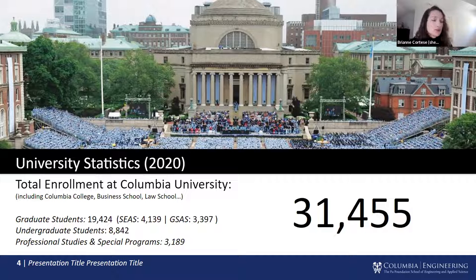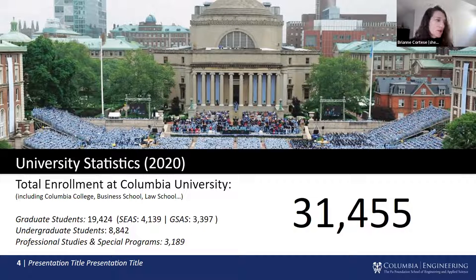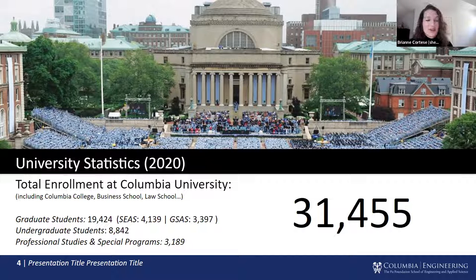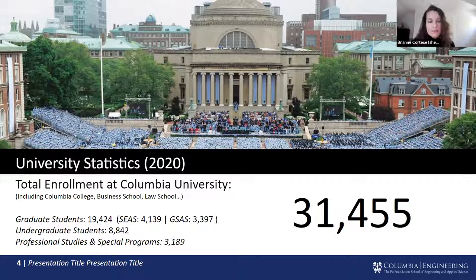As of 2020, the most recent statistics available, there were over 31,000 students enrolled at Columbia, including undergraduate and professional schools. The graduate student population outnumbers undergraduates, and the School of Engineering has over 4,000 students. The data science academic programs reside in the Columbia School of Engineering, which was founded as the School of Mines in 1864, and then renamed in 1997 in recognition of Z.Y. Fu as the Fu Foundation School of Engineering and Applied Science.